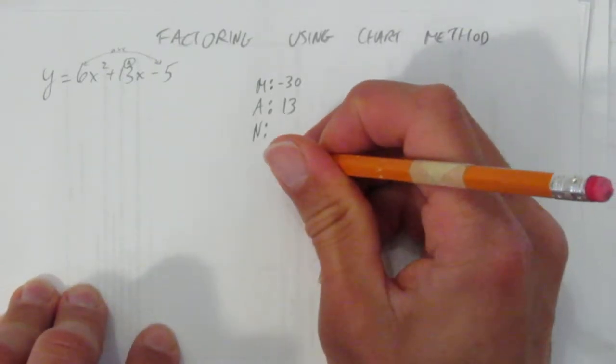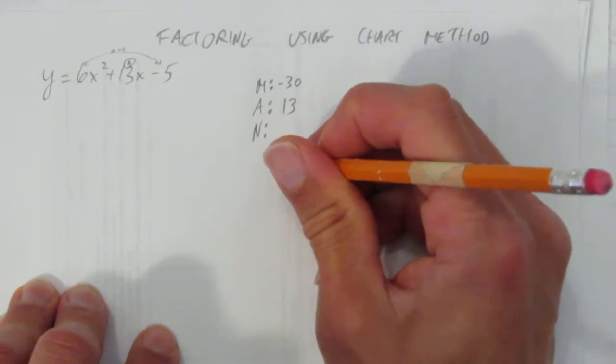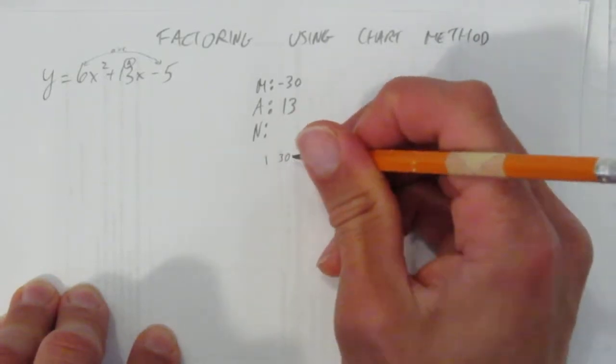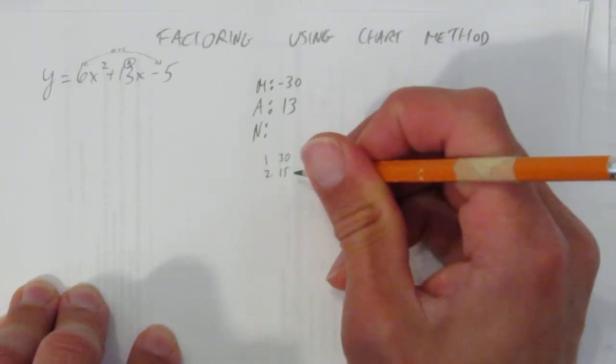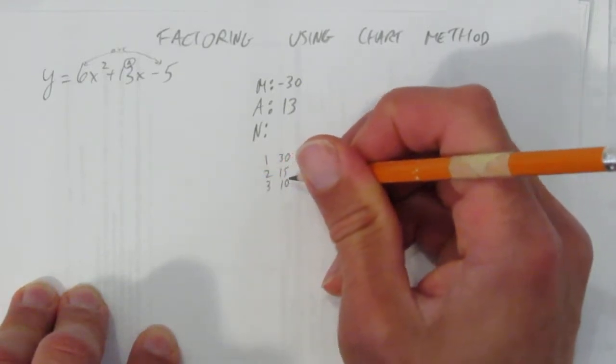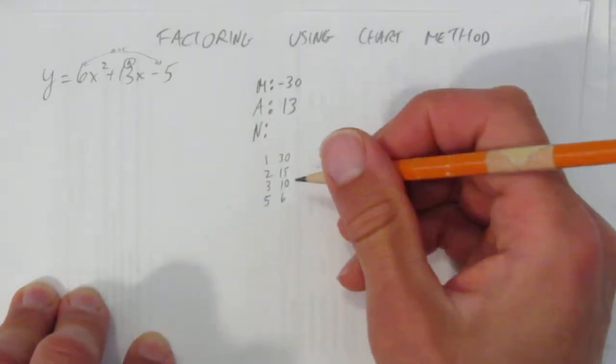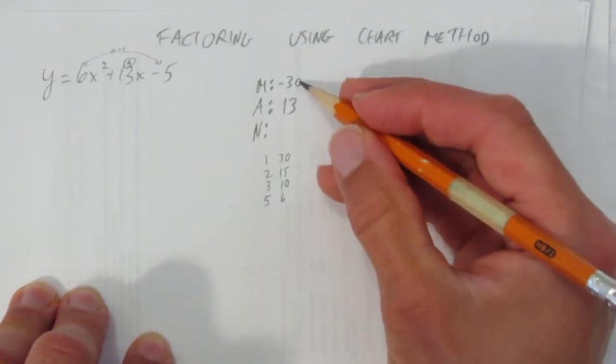If you can't see it right away, write down the combinations of what multiplies to negative 30. What makes 30? 1 times 30, or 2 times 15, or 3 times 10. Does 4 work? No. But 5 does. 5 times 6. And that's all the possibilities that multiply to positive 30.